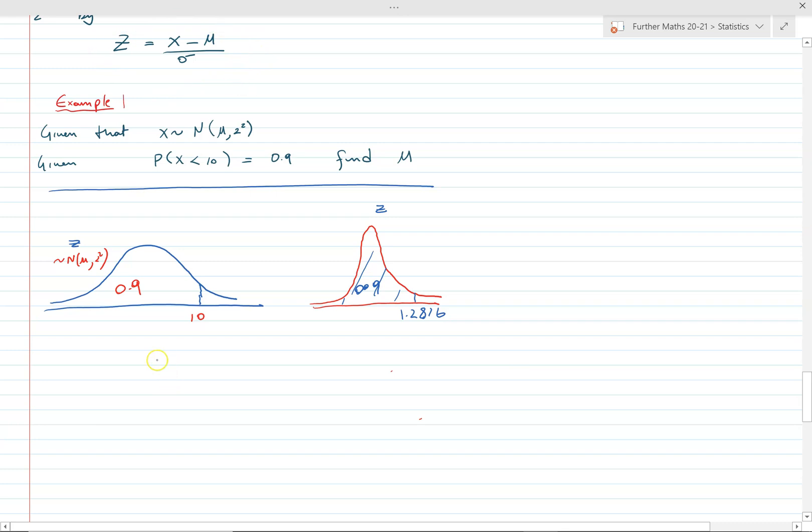We can now use this transformation. The transformation we're going to use is z equals x minus mu over sigma. So we can say that 1.2816 is equal to x, and we know the corresponding x value to this z value is 10, take away the mean which is what we want to find out, divided by the standard deviation. We can rearrange that and get mu is equal to 10 take away 2 times 1.2816, and that comes to 7.44.